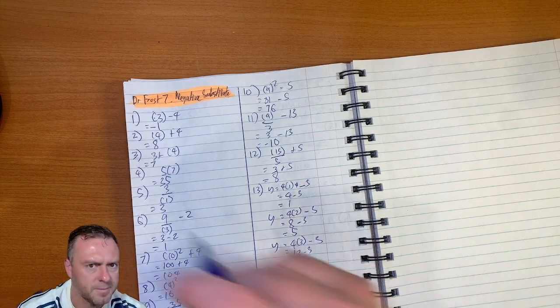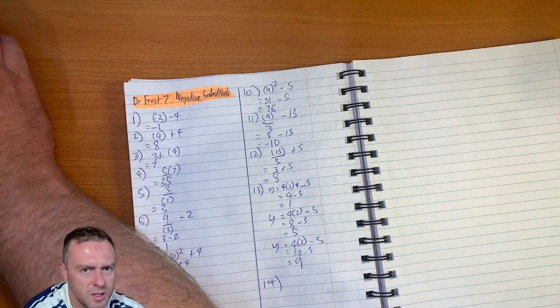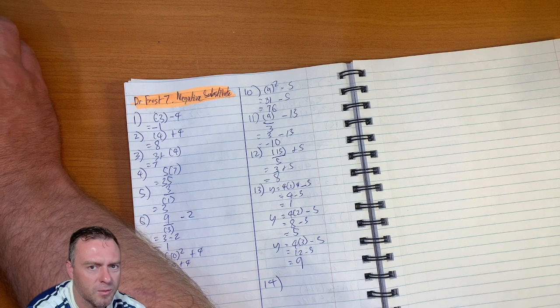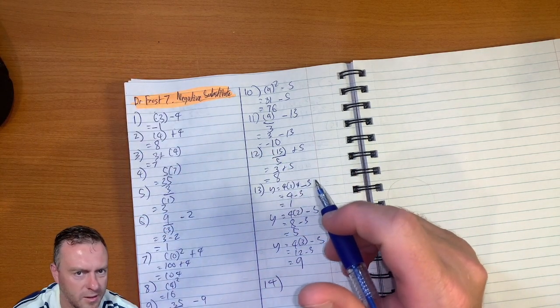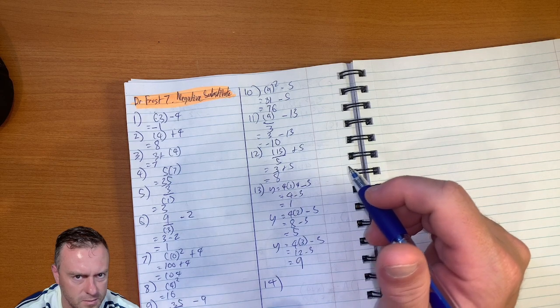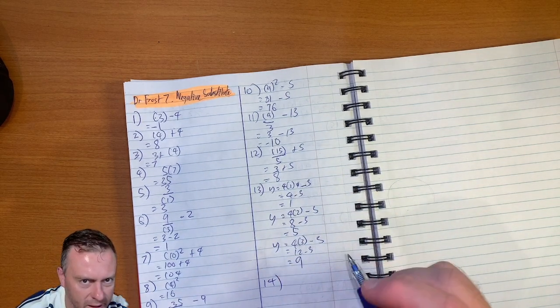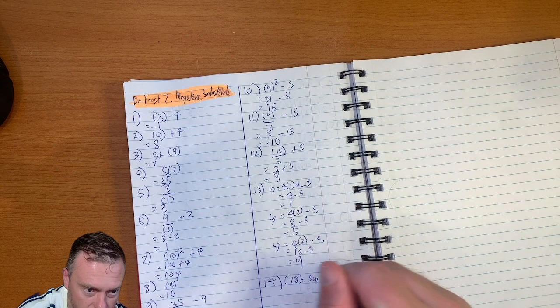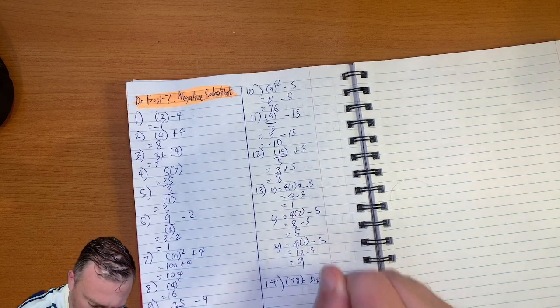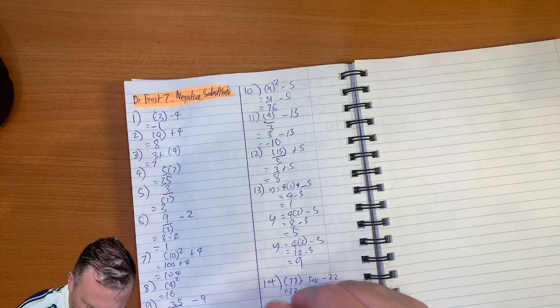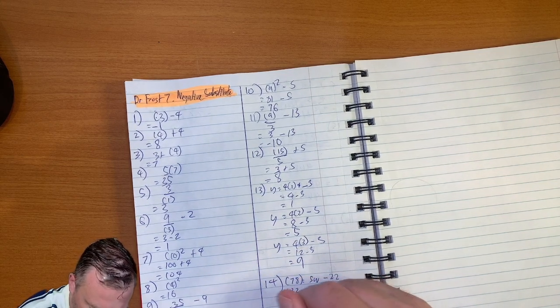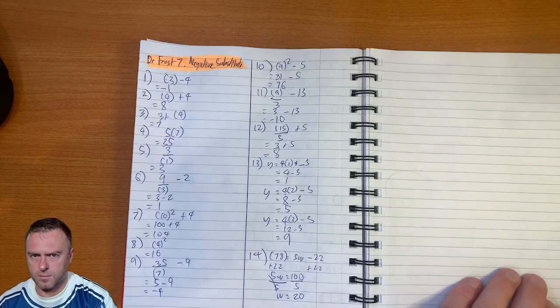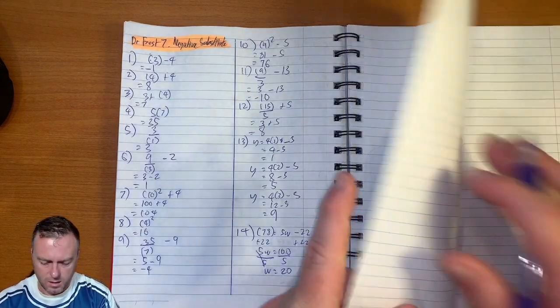Question fourteen. The height of a certain species is h, estimated using its weight, so the height is equal to five times the weight minus twenty-two. Use the formula to work out the weight of a monkey with the weight of w, and the height of seventy-eight. Cool, so we're going to sub in the h is equal to seventy-eight. It's equal to five w minus twenty-two. So we add twenty-two to both sides. Now we get five w equals one hundred. Then we divide both sides by five, and we get the weight is twenty.